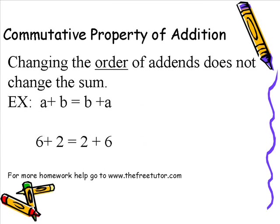First, there's the commutative property of addition. The commutative property of addition says changing the order of addends does not change the sum — the sum being the answer to an addition problem. For example, in algebra: A plus B equals B plus A. If we change the variables to numbers, we could say 6 plus 2 equals 2 plus 6. Both equal 8, so obviously the two expressions equal one another. You could change out any numbers for A or B and still have the same answer. Changing the order of addends does not change the sum.